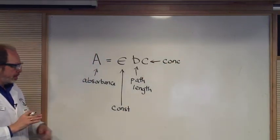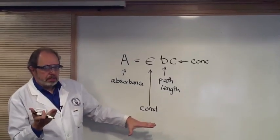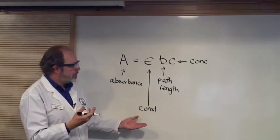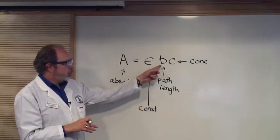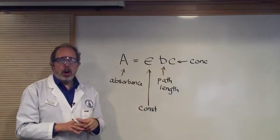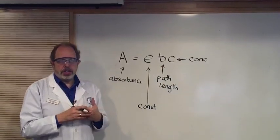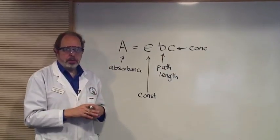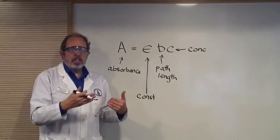What this means is that if you are using a constant colored species, and if the path length is the same, then these two items are constant and A, absorbance, becomes a direct function of concentration. It means that the higher the concentration, the more light is absorbed. That's pretty intuitive. Something that's more concentrated is going to be darker.